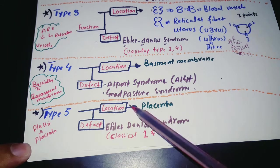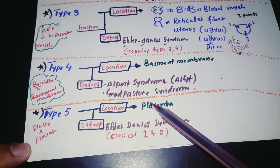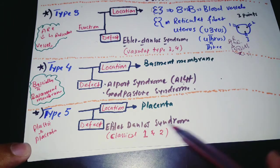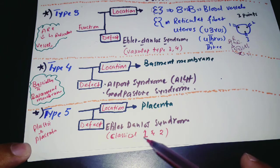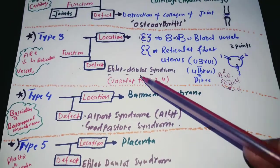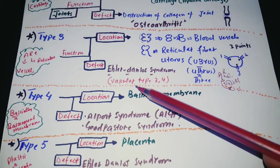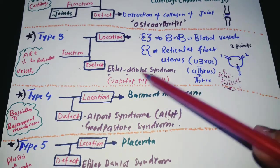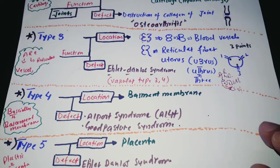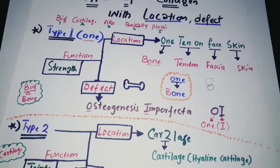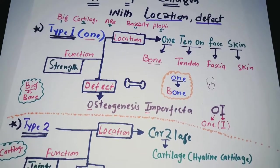Type 5 comes from 'Plastic' in the mnemonic — its location is the placenta. The defect in Type 5 leads to Ehlers-Danlos syndrome classical type 1 and type 2. The Ehlers-Danlos vascular type comes from Type 3, as it is present in blood vessels. Just remember the mnemonic: 'Big Cartilage Are Basically Plastic.'